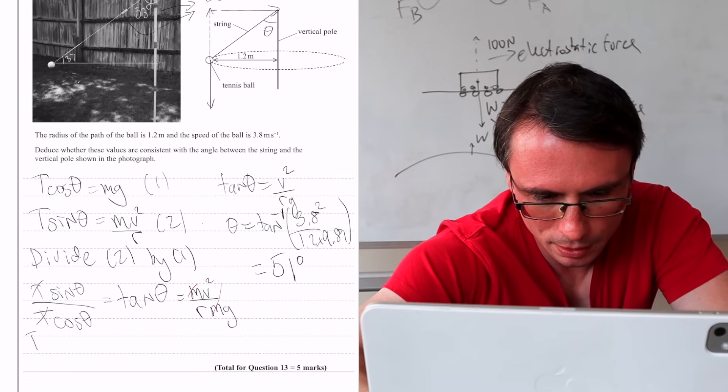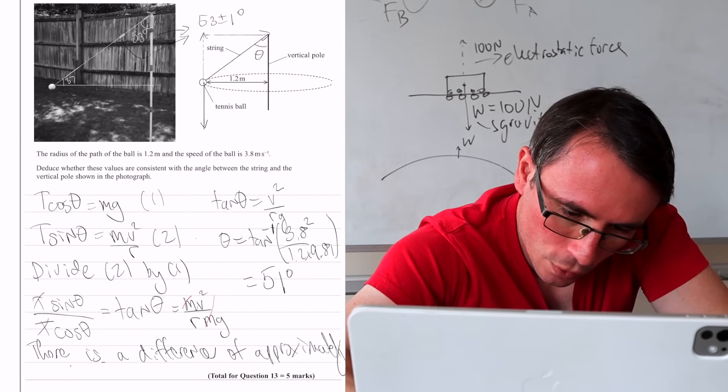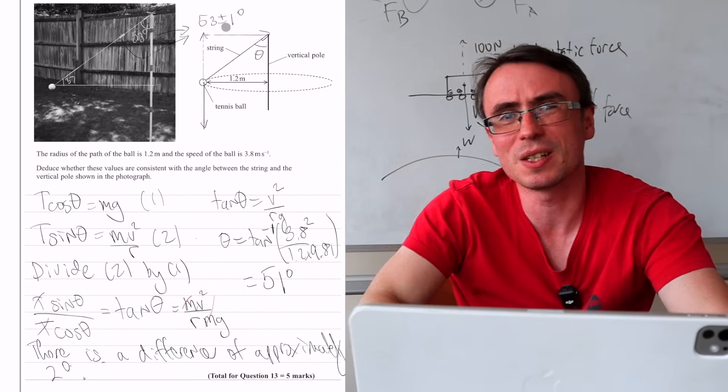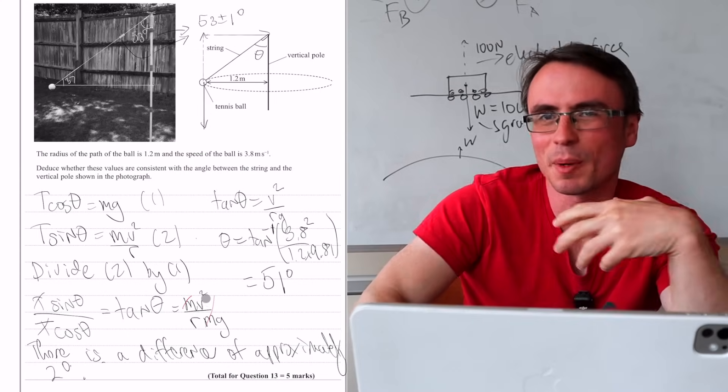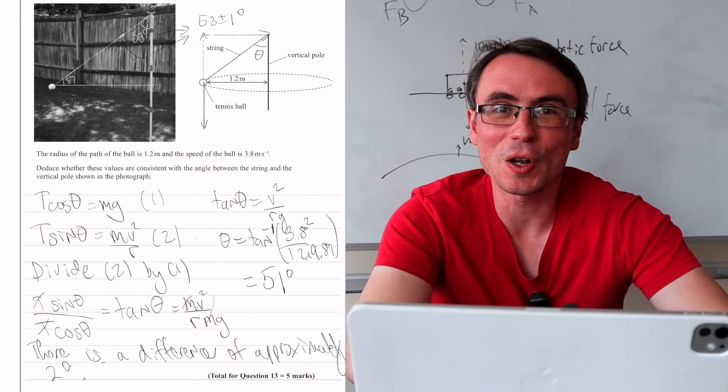So we can say that there is a difference of approximately 2 degrees. However, this here had an uncertainty of about a degree. If I had a little bit more time, I might even calculate something like the percentage difference. This question was a lot of fun,